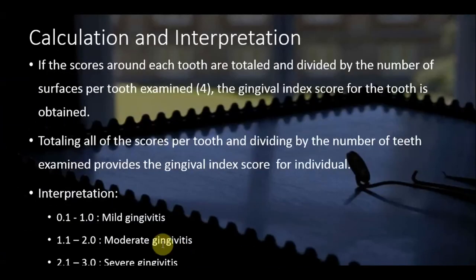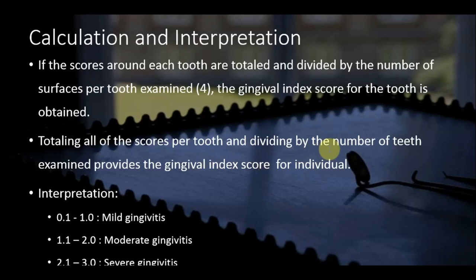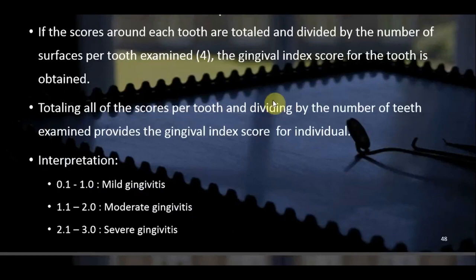Calculation: scores around each tooth are totaled and divided by the number of surfaces examined (4), giving the GI score for that tooth. Totaling all tooth scores and dividing by number of teeth examined gives the individual's score. Interpretation: 0.1 to 1.0 = mild gingivitis; 1.1 to 2.0 = moderate gingivitis; 2.1 to 3.0 = severe gingivitis. This pattern — total scores divided by number of units — is consistent across most indices.